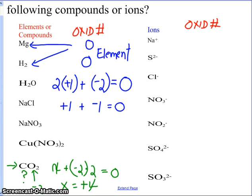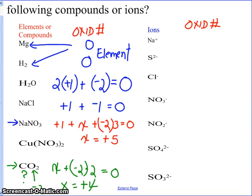Before we go any further, let's figure out the oxidation number on the sodium, the nitrogen, and the oxygen in sodium nitrate (NaNO₃). The oxidation number on nitrogen is the one we don't know. We know sodium is plus one and oxygen is minus two. Putting that into our equation, we can solve — the oxidation number of nitrogen is plus five.